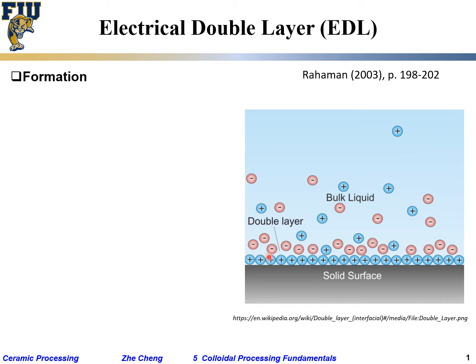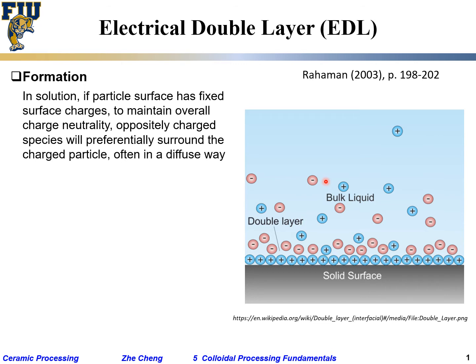In solution, the negative charge ions are not in a one-to-one correspondence with the surface charge. It's more or less random — closer to the surface you have more negative charge ions, and further away you have less and less. This structure — positive charged ions on the surface and negative charge ions distributed outward — is called a double layer.